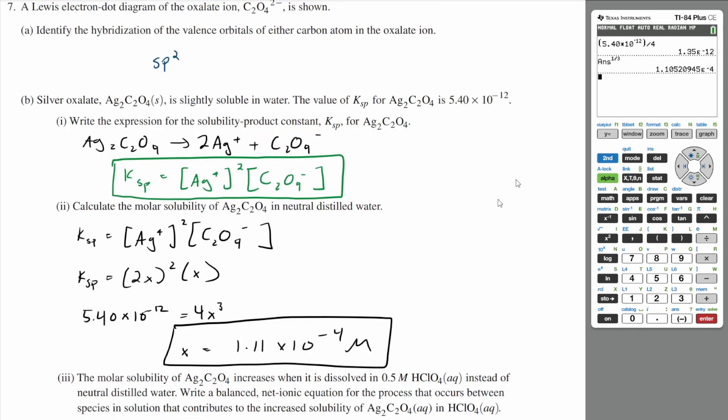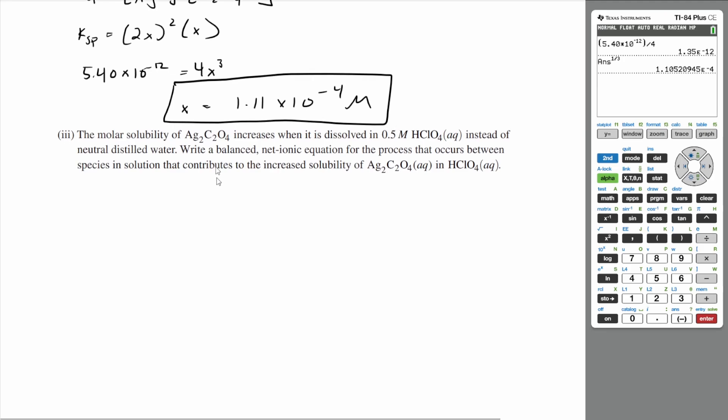All right, let's do the last part. Part iii: the molar solubility of Ag2C2O4 increases when it is dissolved in 0.5 M HClO4, which is perchloric acid, instead of neutral distilled water. Write a balanced ionic equation for the process that occurs between species in solution that contributes to the increased solubility of Ag2C2O4 in HClO4.